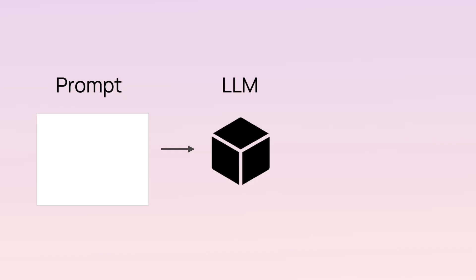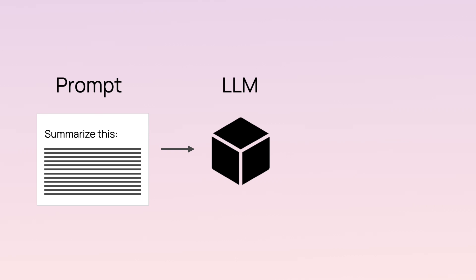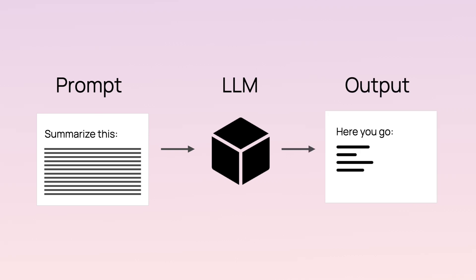To interact with the model, you write a prompt — it's a set of text instructions. The model then outputs text in return. You can ask for a lot of things, like extract information, write summaries, generate code, write emails, translate things, and so on.